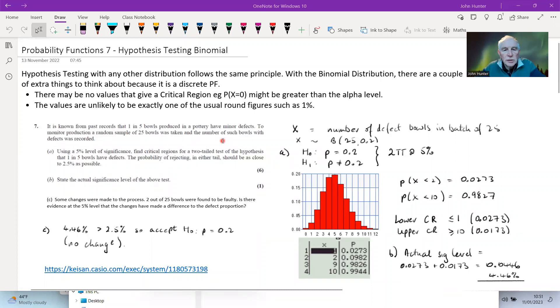This is the seventh video in probability functions to do with hypothesis testing with the binomial distribution. I'm assuming that you've seen the normal distribution hypothesis testing video because the same mechanism, the same process are applied to testing with the binomial. There are just a couple of differences, main differences that we need to think about when we're doing this because it's a discrete probability function. One of the things is that there actually might not be a critical region. If the probability of zero actually falls above our significance level, then even a test statistic of zero is not going to fall into the critical region.